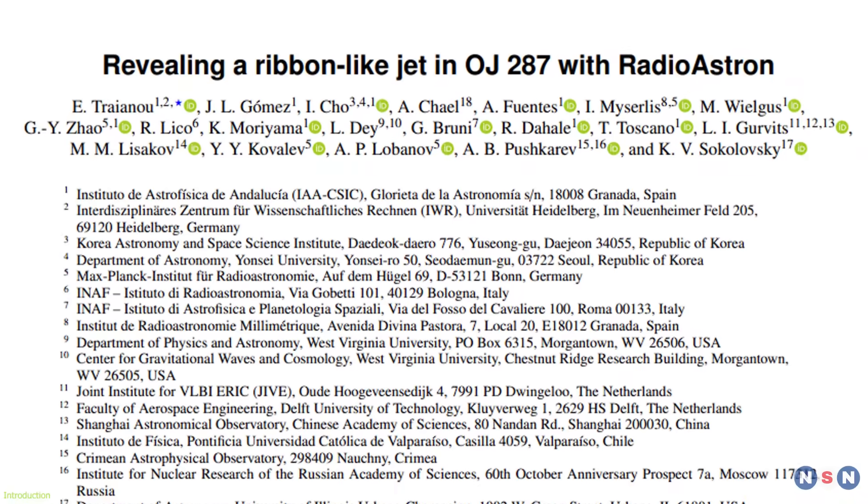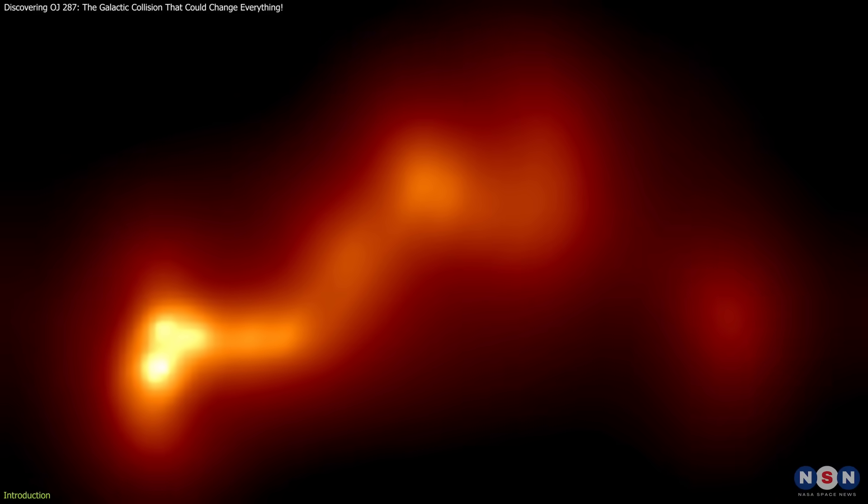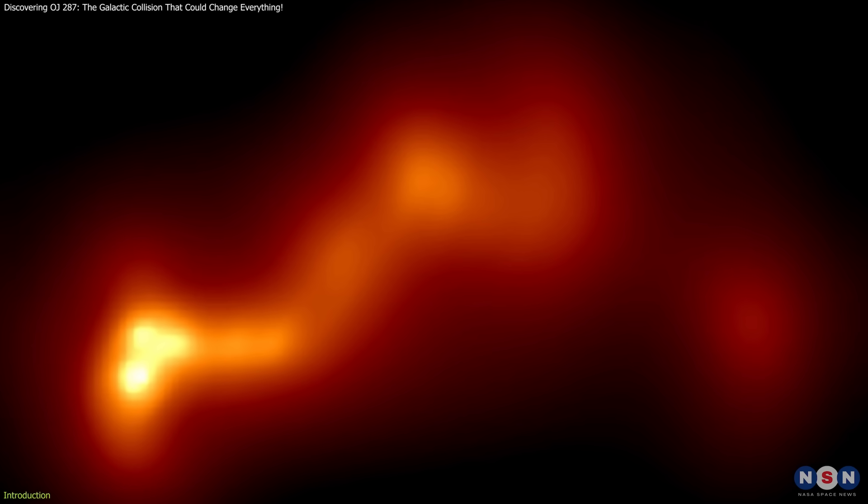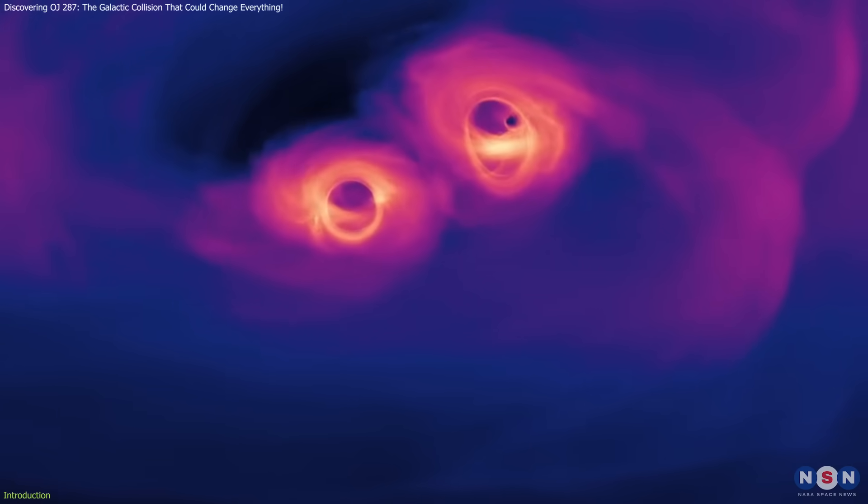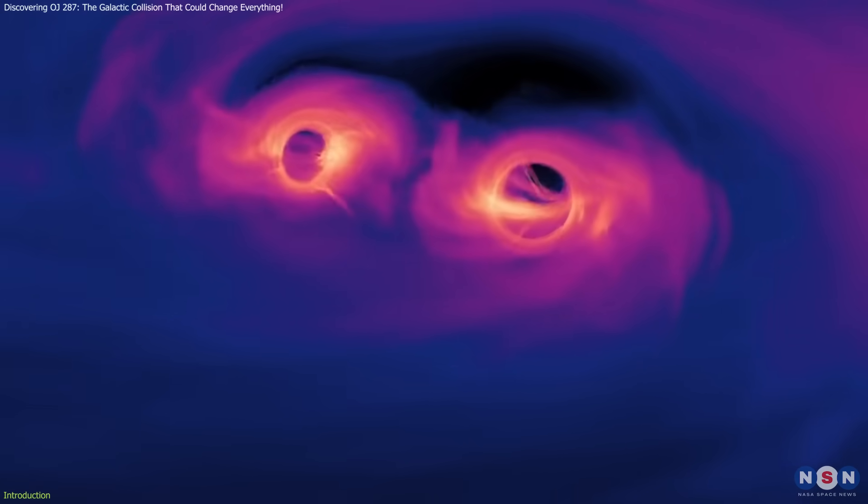Recent observations revealed a unique feature: the jet emitted by one of the black holes is severely bent. This could be due to the gravitational influence of the second black hole in the system.